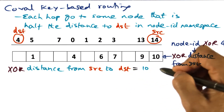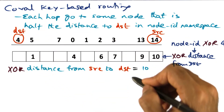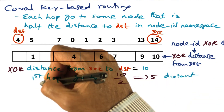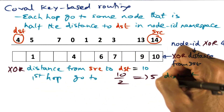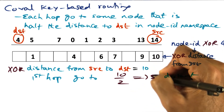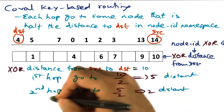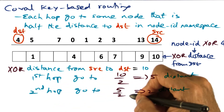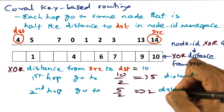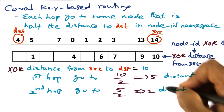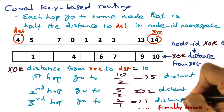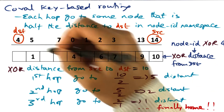The XOR distance between the source and the destination, 14 and 4, is 10. So in the first hop, I'll go to a node that is half the distance to my desired destination — half of 10 is 5, so I want to go to a node 5 distant. Second hop, I want to go to a node that is half of 5, that is 2 distant from the desired destination. Third hop, I want to go to a node that is 1 distant — finally I'm home.